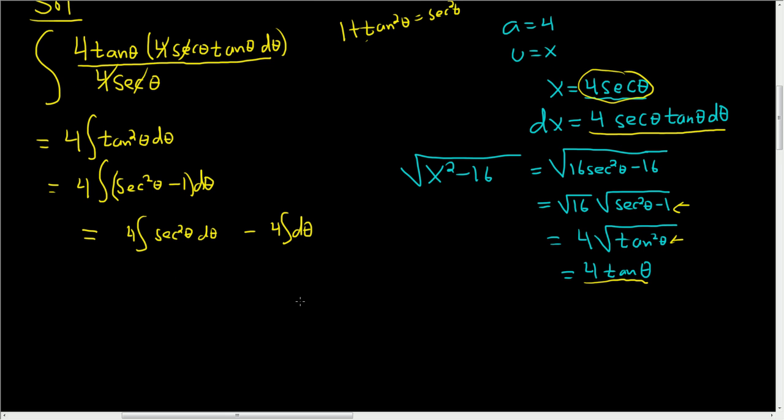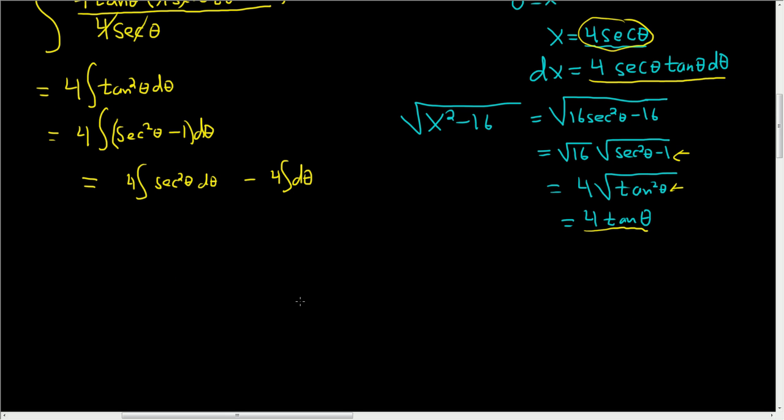To integrate secant squared, we think what is a function whose derivative is secant squared? Tangent. So this is 4 tangent theta minus 4 theta plus our constant.